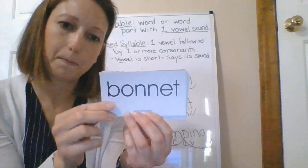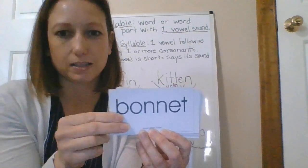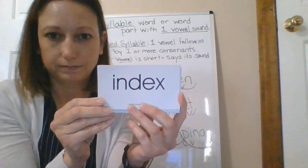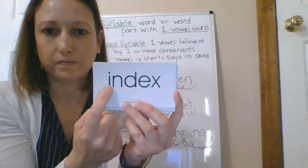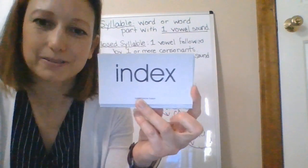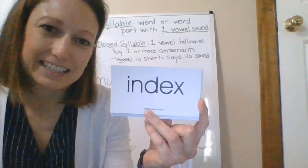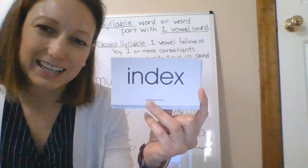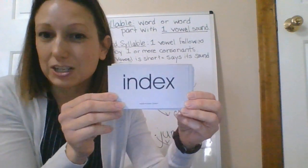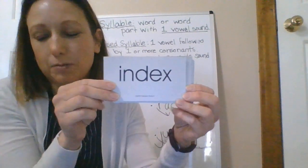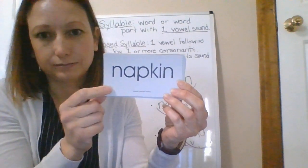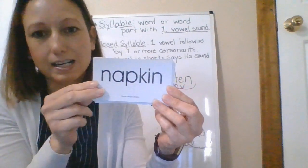Bon-net — bonnet. That's a type of hat that ladies used to wear, a bonnet to protect their faces from the sun. This next word starts with a vowel — here are our two consonants, divide between them — in-dex — index. An index comes in the back of a non-fiction book and tells you where to find specific information. Nap-kin — napkin.